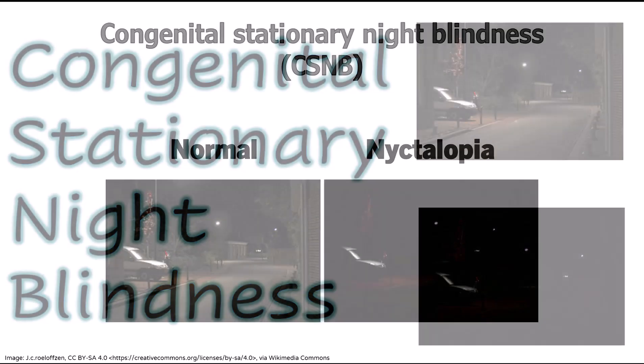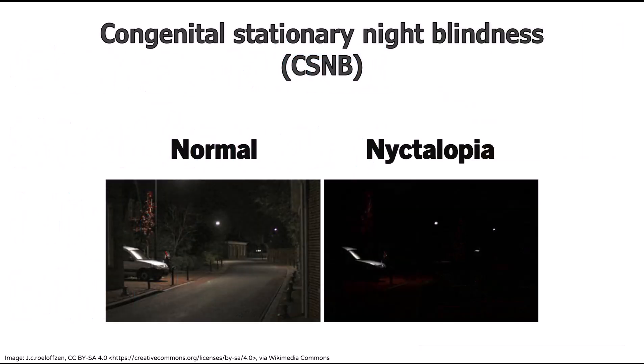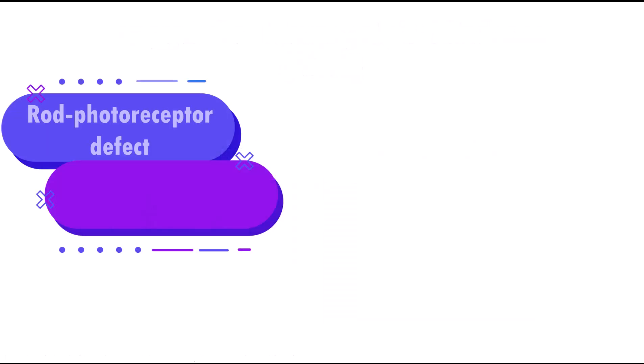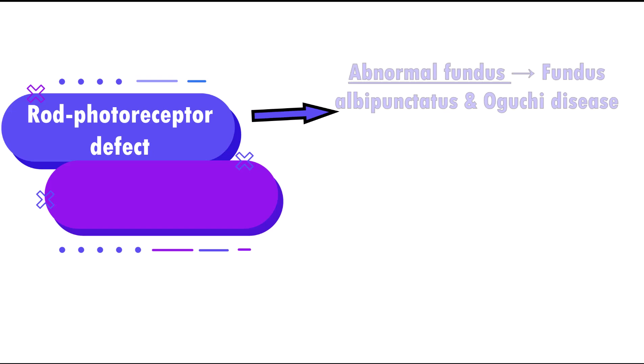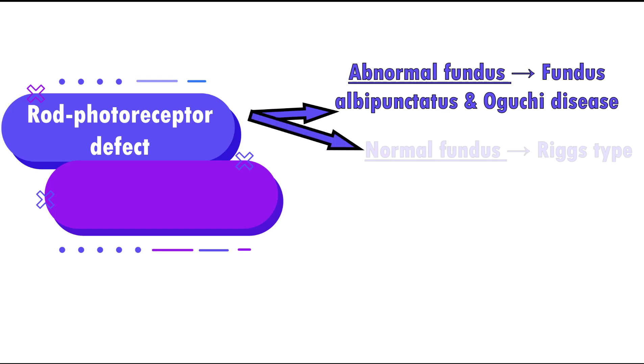Congenital stationary night blindness is broadly of two types. The first is a defect in the rod photoreceptors, which is further divided into those conditions with an abnormal fundus and the Riggs type, wherein the fundus is largely normal.